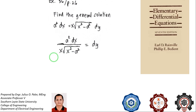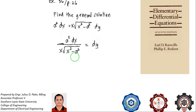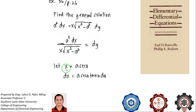What are we going to substitute for x? Based on the identity, we would want to arrive at secant squared of theta minus one, which equals tangent squared. So we let x equal to a secant of theta, and differentiating x gives us a secant theta tangent theta d theta.